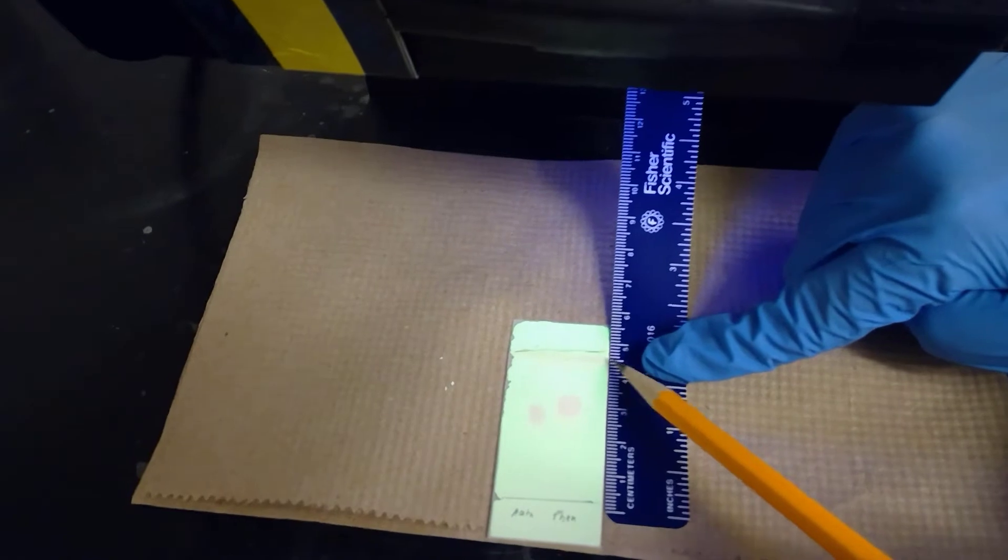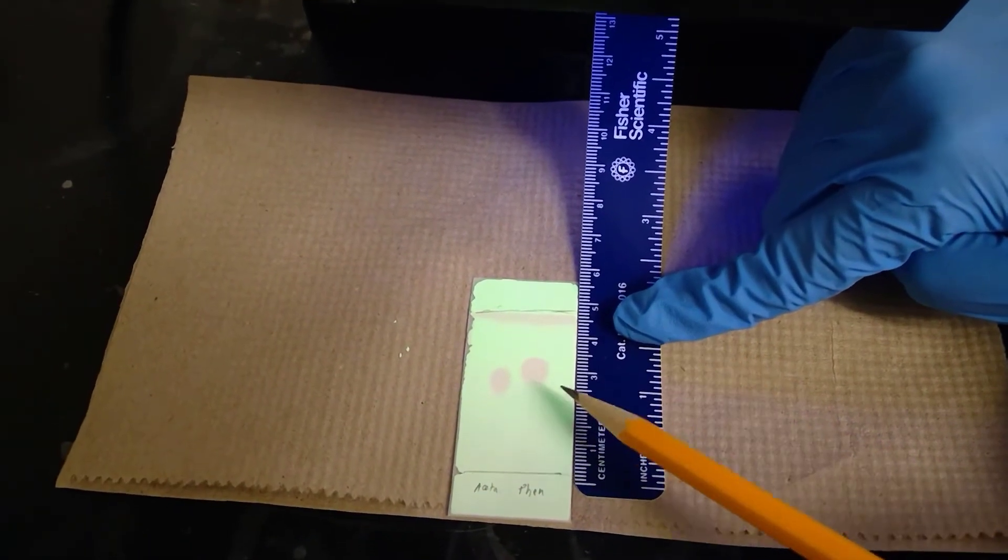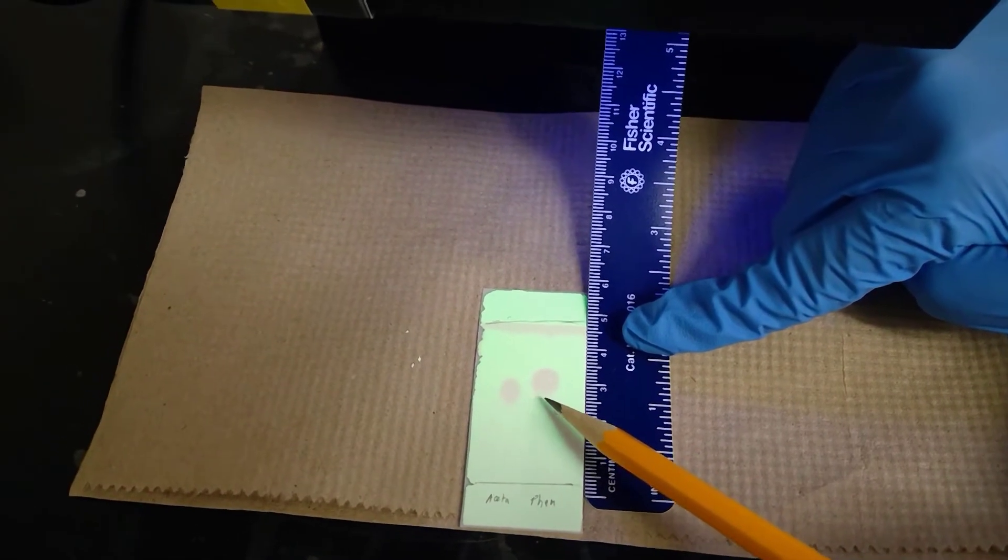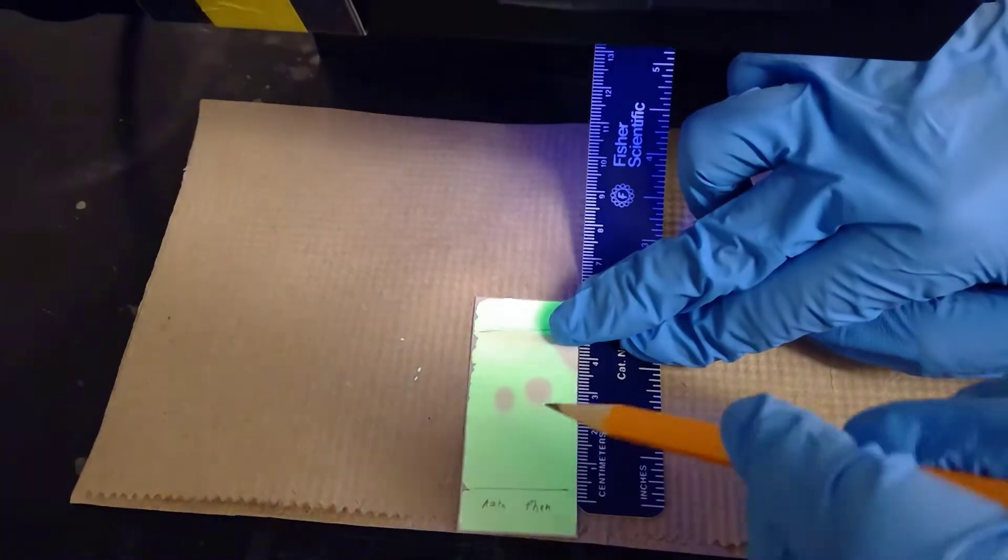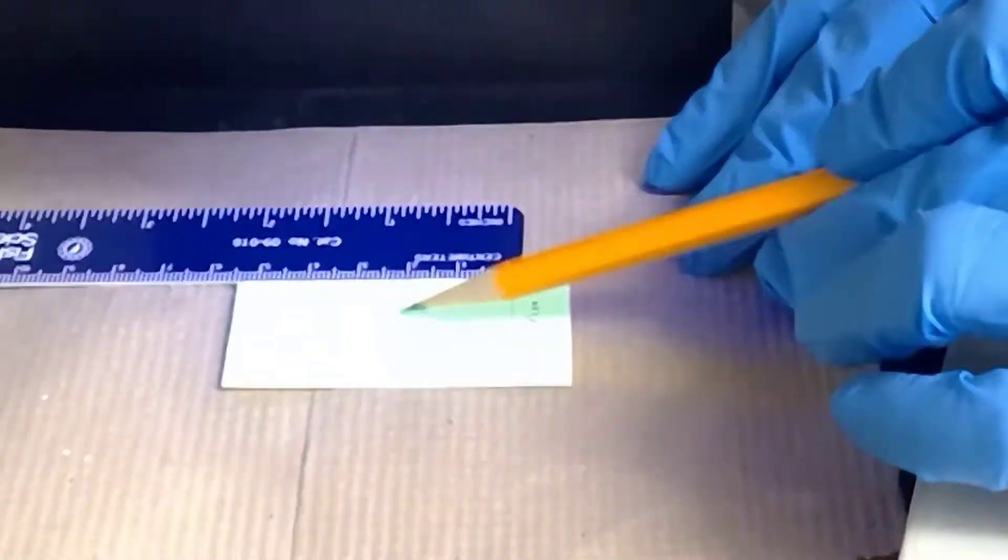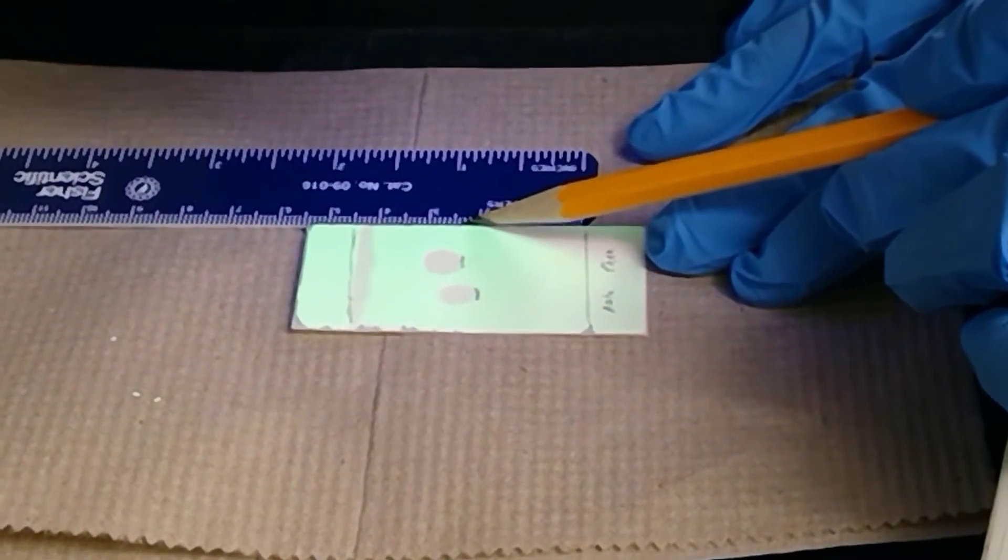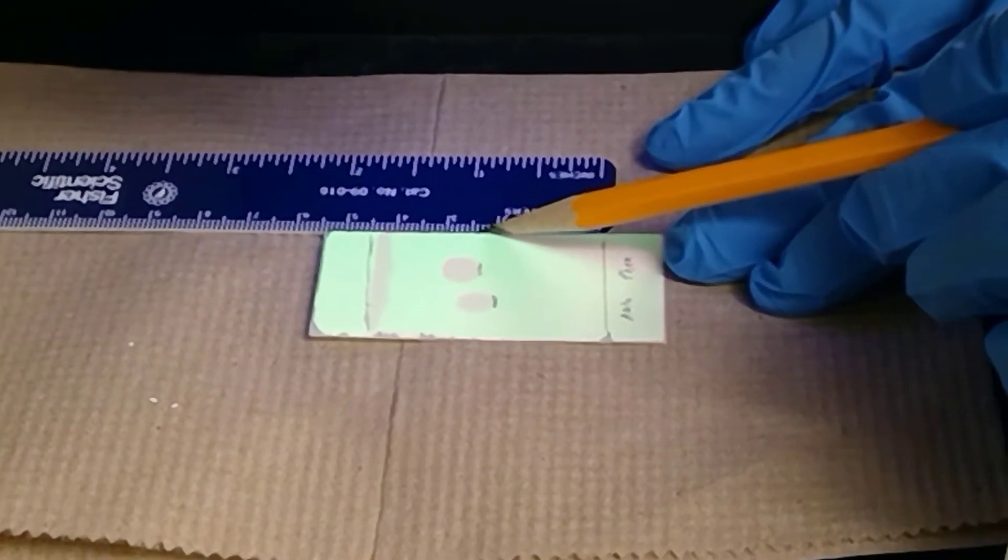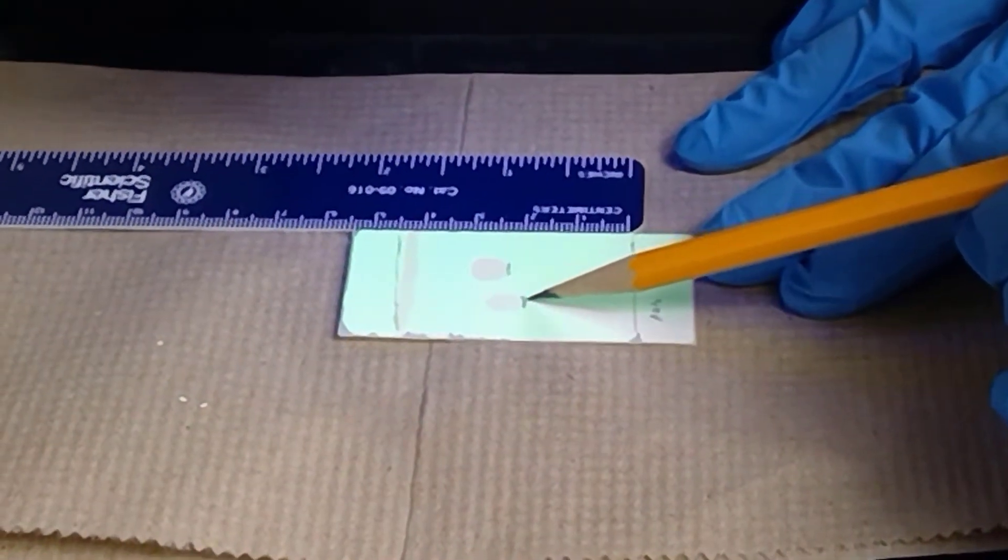I'm going to go from the bottom of each spot for accuracy here. For our phenacetin compound, it looks like our Rf value would be 2.4 centimeters, and for acetaminophen, we would have a value of 2 centimeters. I'm going to go ahead and write that down.